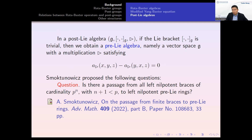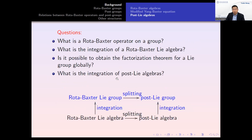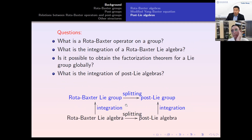Since we have Rota-Baxter operators on associative algebras and Lie algebras, can we define Rota-Baxter operators on groups? If so, is this the integration of the Rota-Baxter operator on Lie algebras? We also want to know whether the local factorization theorem of Semenov-Tian-Shansky can be made global. Furthermore, since Rota-Baxter operators induce post-algebras, we can consider what is the integration of post-algebras, and try to answer Smoktunowicz's question in a more general framework.